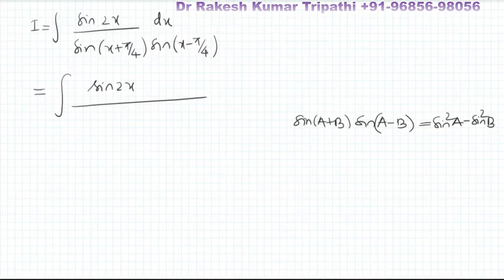So on applying this identity, it can be written as sin²x - sin²(π/4) dx.